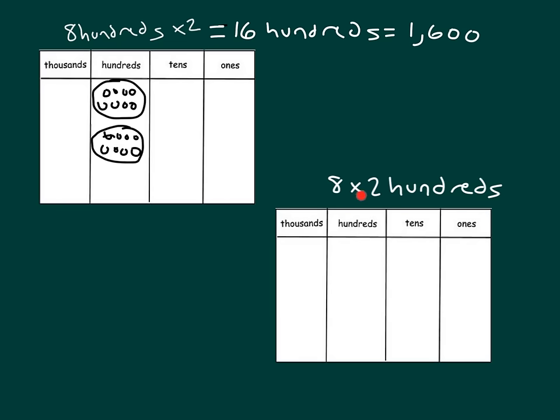When I have 8 times 2 hundreds, let's see how that looks. I'll start with the 2 hundreds, right? So we have 1 and 2, and I will circle that. But this time, it says there's 8 of those. So I'm multiplying by 8.